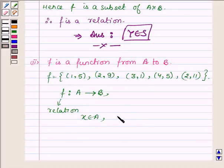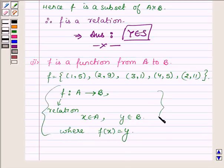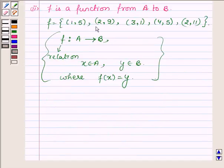Then here F(X) is equal to Y. So this is a function. And here the pairs (2,9) and (2,11) have the same first element.